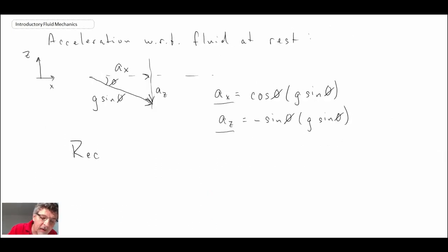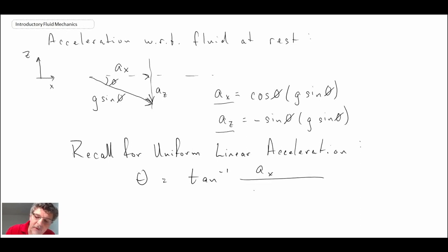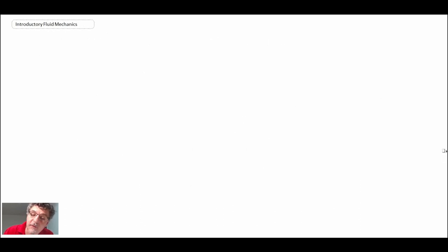Recalling the equation for the free surface under uniform linear acceleration, the angle theta is defined using ax — the x-component of acceleration — divided by the quantity g plus az, where g is the gravitational scalar and az is the z-component of acceleration. We now take those ax, az, and g values and apply them.